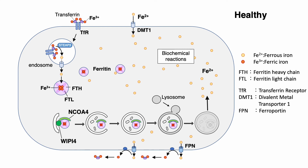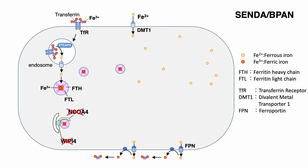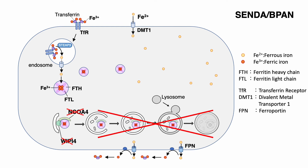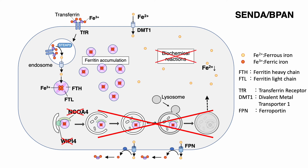I will now show the changes of these molecules of iron metabolism in BPAN patients. In BPAN, decreased expression of WIPI4 reduces the expression of NCOA4, which is required for ferritinophagy. Ferritin cannot be degraded by autophagy, and ferrous iron is not released. Then ferritin accumulates in the cells, and biochemical reactions cannot work well.